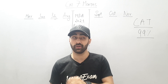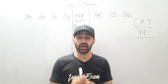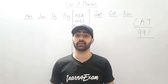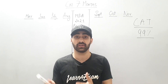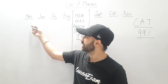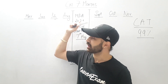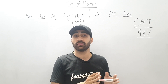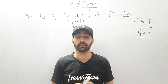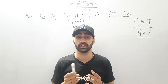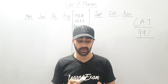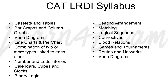All right, so CAT 99 percentile — today is like the first day, so we start with motivation. Under verbal, as you can see right now on the screen, you have Reading Comprehension, Para Jumbles, and much more. But these two are the most important for CAT. Then we have LRDI.